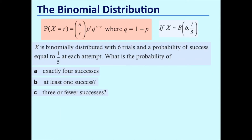Here's a question for you to have a go at. x is binomially distributed with six trials and a probability of success equal to one-fifth at each attempt. What is the probability of exactly four successes, at least one success, and three or fewer successes?